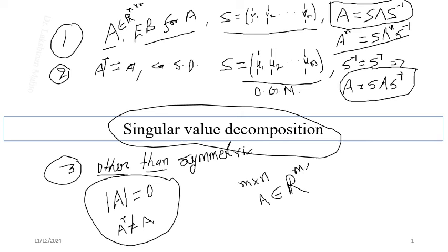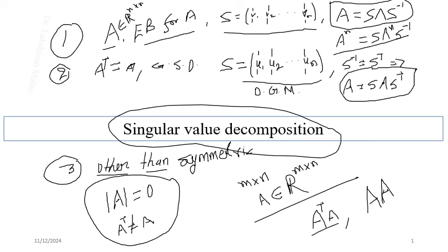Based on the positioning of A, we call one the right product matrix and the other the left product matrix. The reason for this naming is that the corresponding eigenvectors will be called left and right singular vectors. From a rectangular matrix, you are constructing two product matrices: A transpose A (right product matrix) and A times A transpose (left product matrix). Both are symmetric, and both share the same set of non-zero eigenvalues.